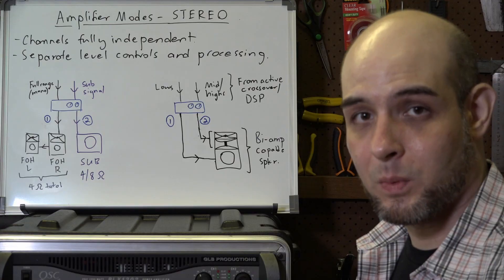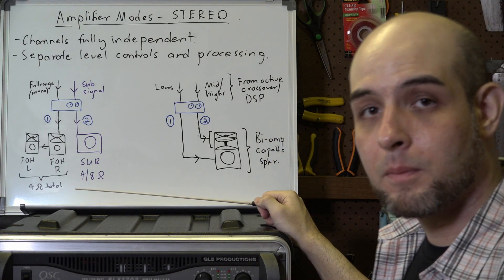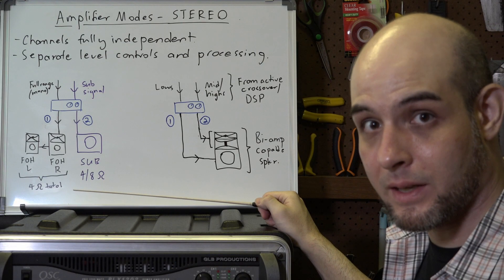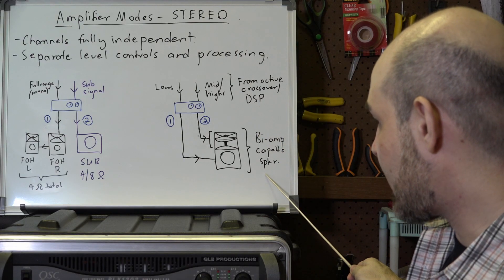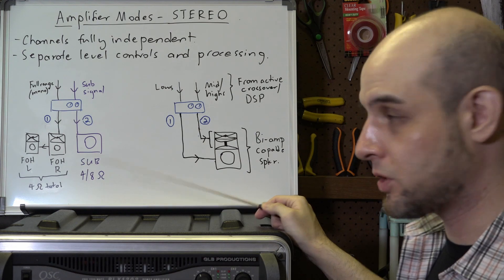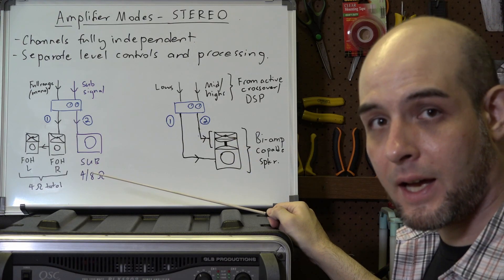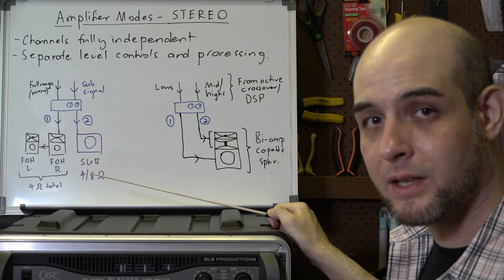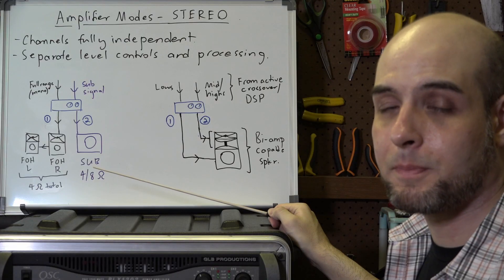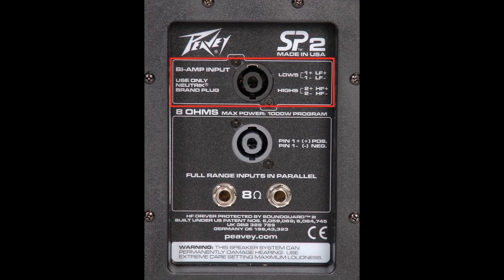The last configuration for stereo mode is using both channels to run a bi-amplified speaker. Speakers that are bi-amplified have the ability to take two amplifier channels — one to run the lows and one to run the highs, or for a three-way speaker, to run both the mids and the highs. I can think of a number of large speaker cabinets, for example the PVSP2, that are configured this way.